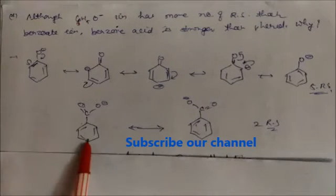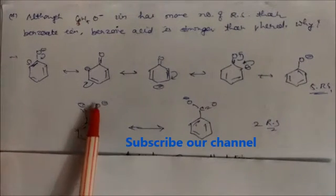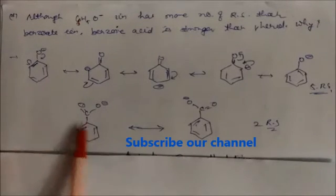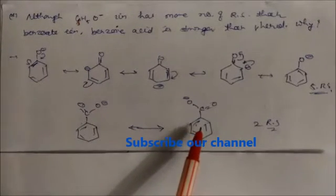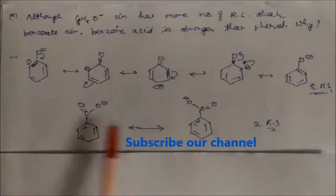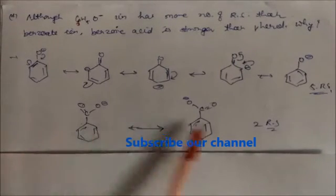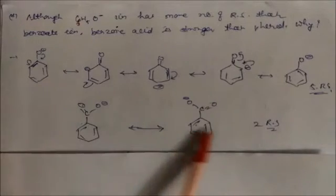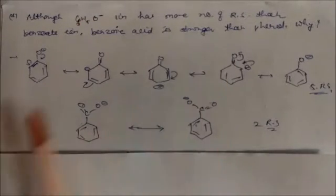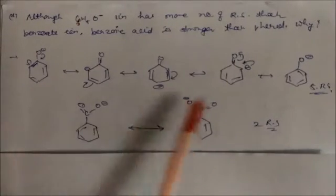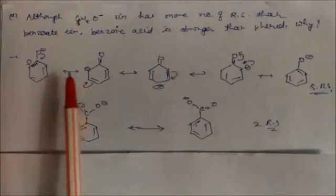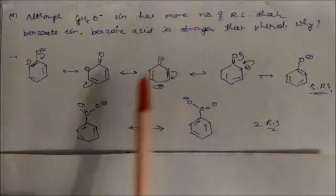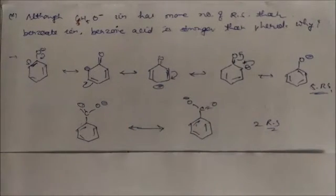For the benzoate ion, resonance occurs only on the carboxylate group — the negative charge does not disperse into the ring — giving only two resonating structures. However, the charge is more effectively stabilized in the carboxylate group. That's why benzoic acid is stronger than phenol despite phenoxide having more resonating structures.